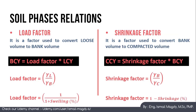To convert between the different soil conditions we use the following simplified formulas: bank cubic yard = load factor × shrinkage factor × loose cubic yard, where load factor = γ_loose / γ_bank. And compacted cubic yard = shrinkage factor × bank cubic yard, where shrinkage factor = γ_bank / γ_compacted.